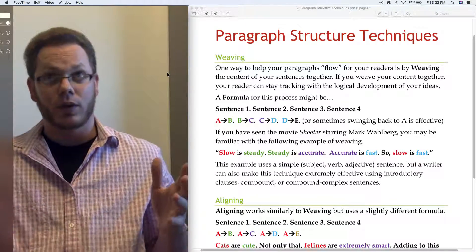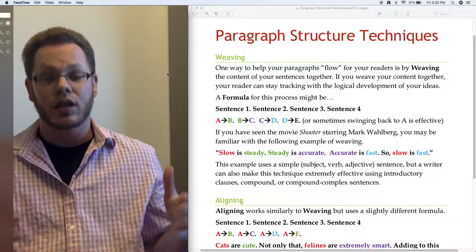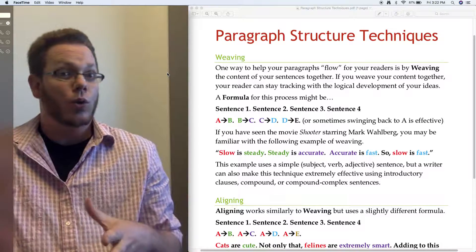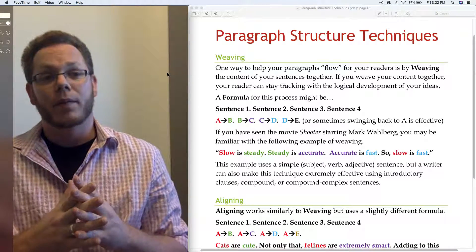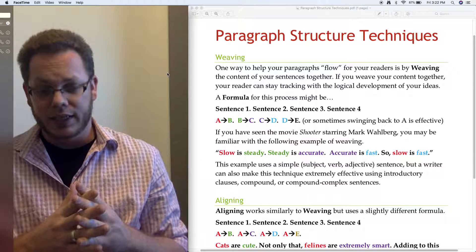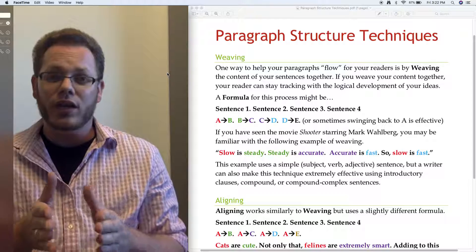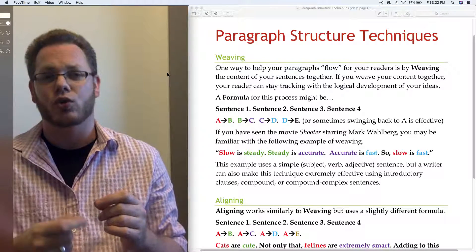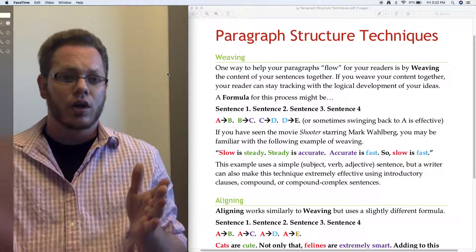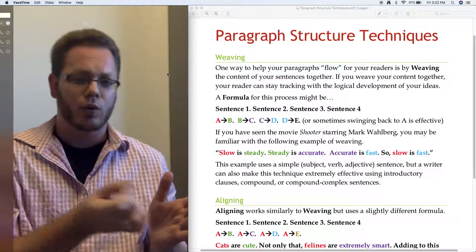His goal in the movie was to help this green rookie FBI agent be more capable since he was the only guy he had to help him against all the baddies with all the big guns. The idea here with writing is that when we weave, it's almost like an internal writing cross stitch of sorts, where you take the last thing you said, you swing forward, and then you come back.